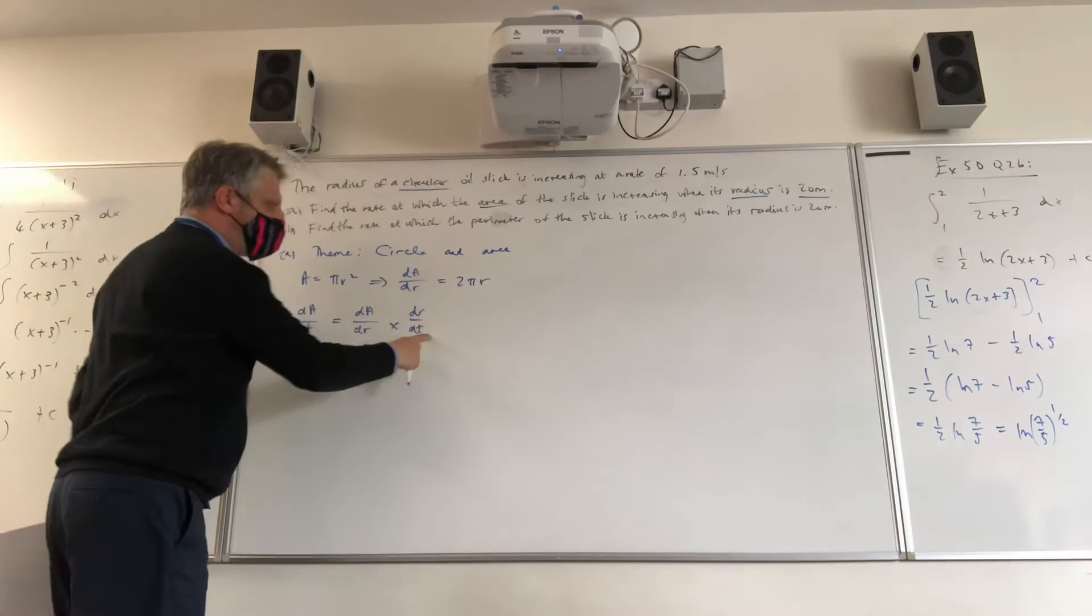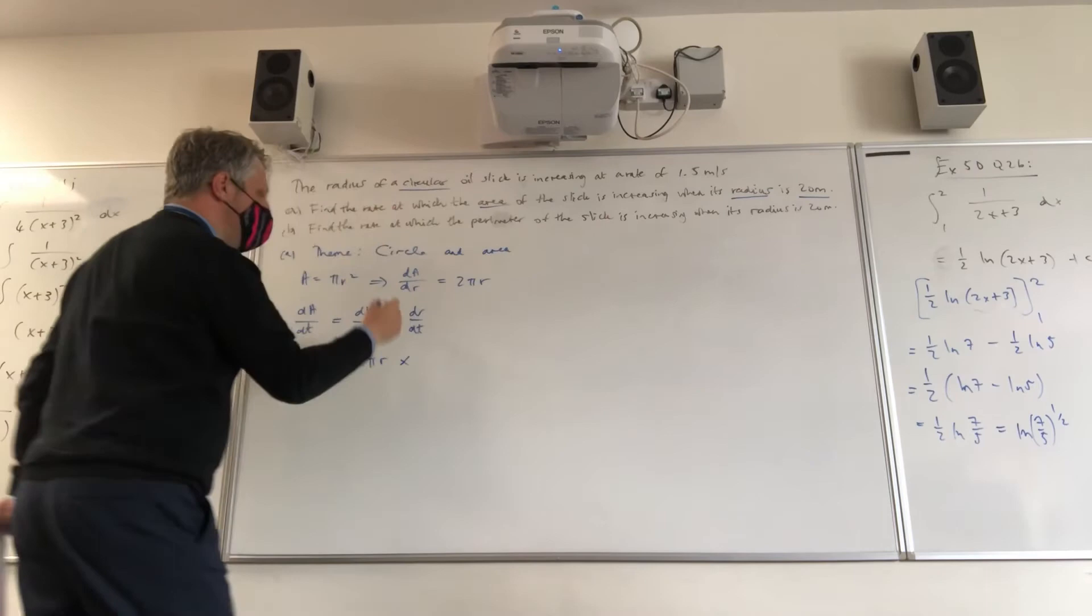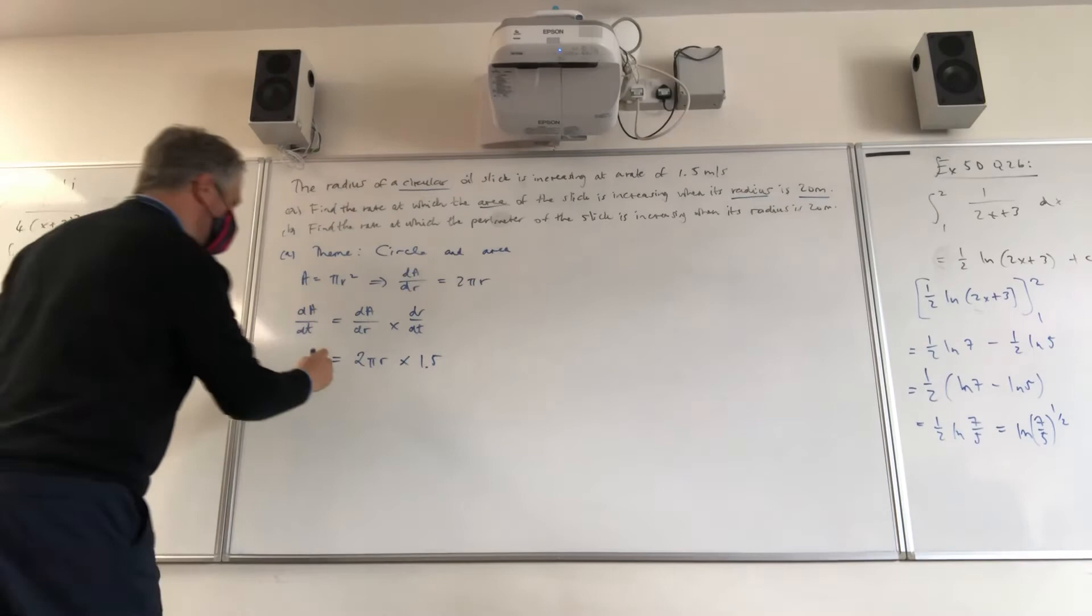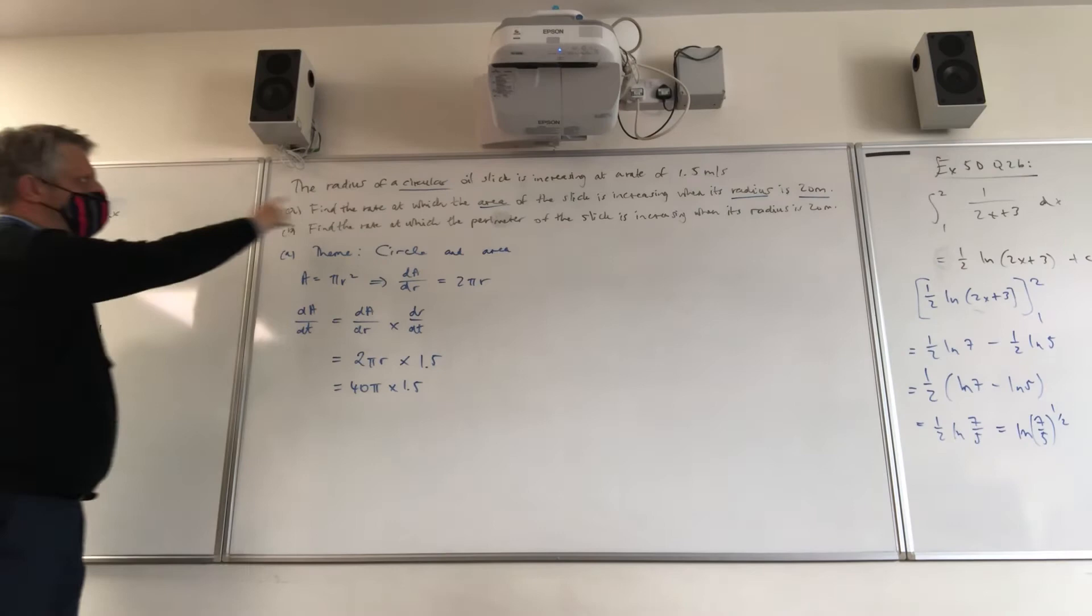Well, we now know that dA/dr is going to be 2πr. And we also know that dr/dt, the radius changing over time, is 1.5. So that's really useful. We also know that r is 20 in this question. So we're dealing with 40π times 1.5. And what information does that give us? Well, it gives us the rate at which the area is changing over time, which is exactly what we've been asked to do. Does that make some sense to you?